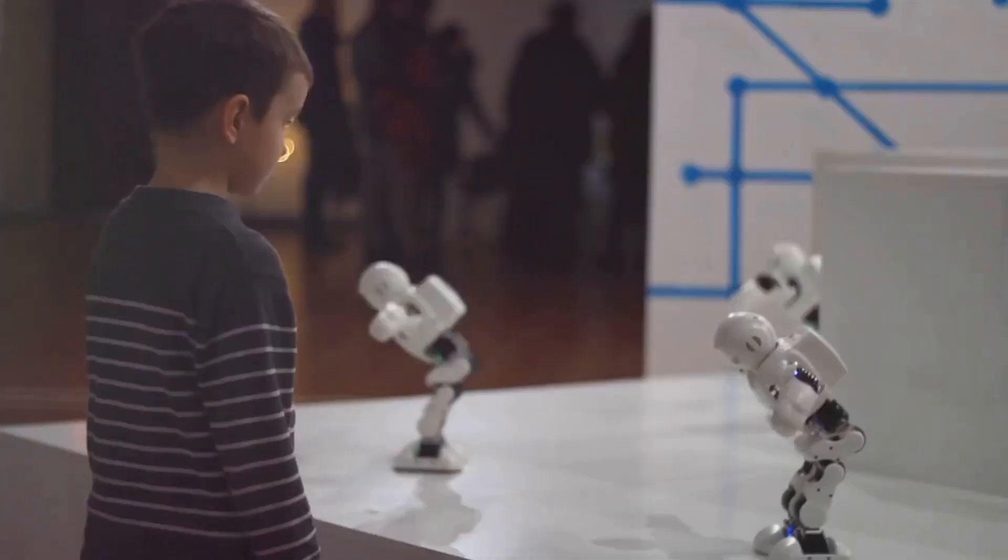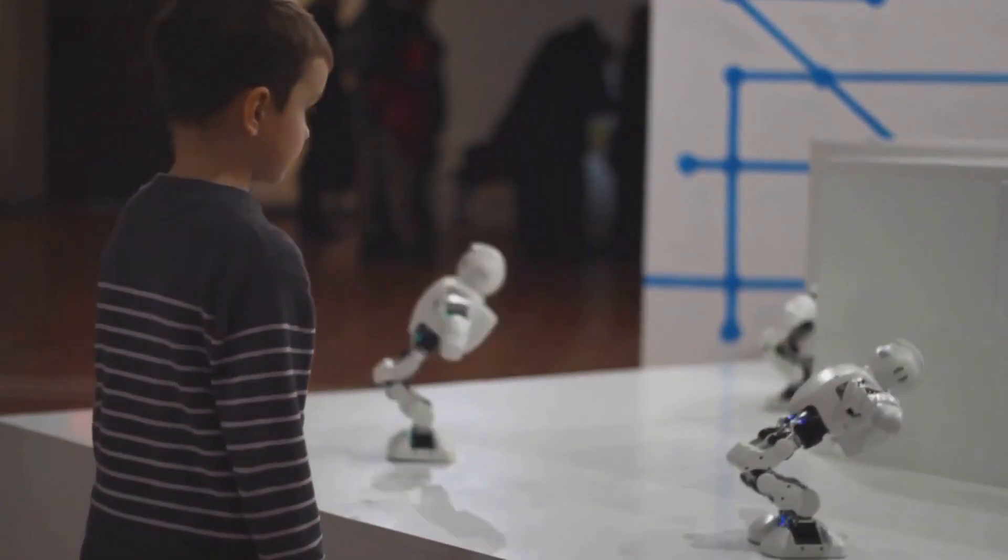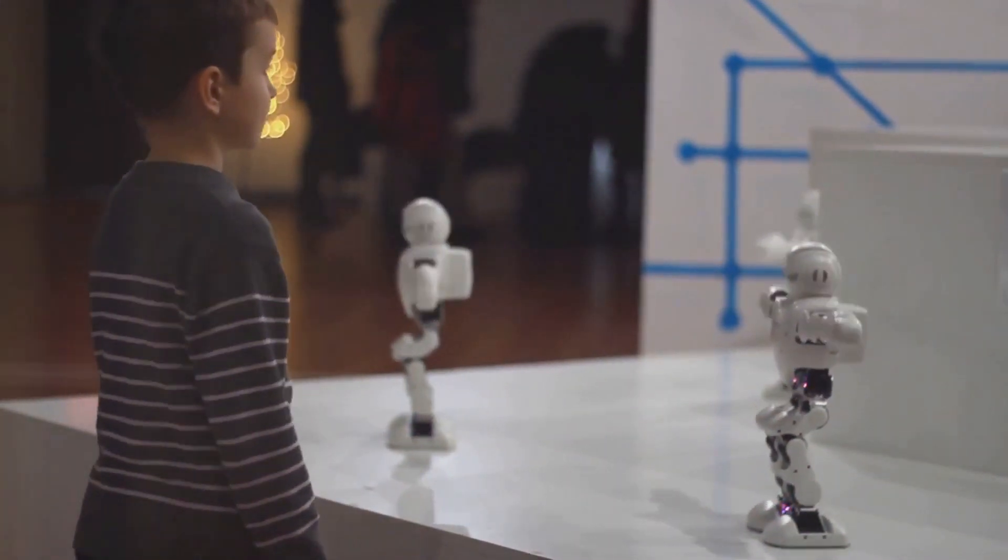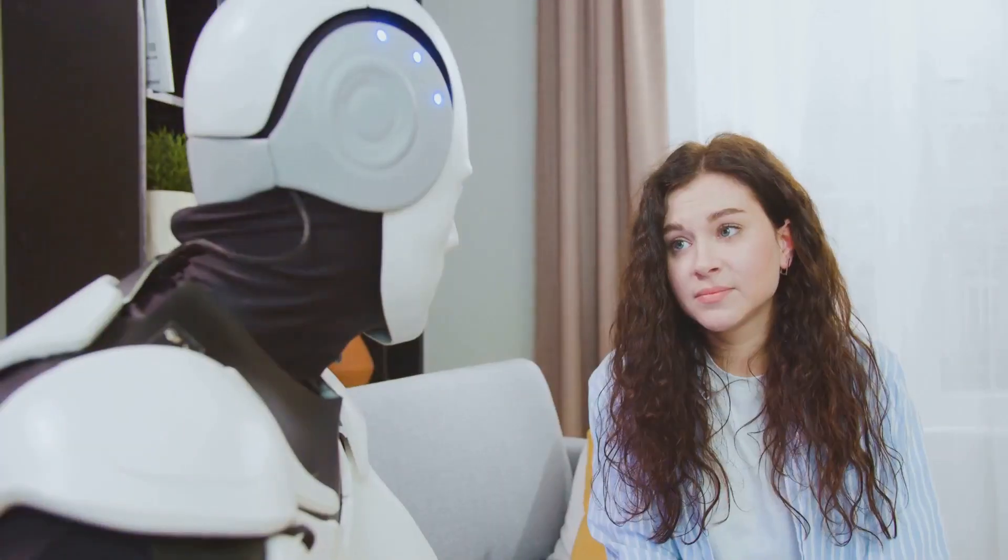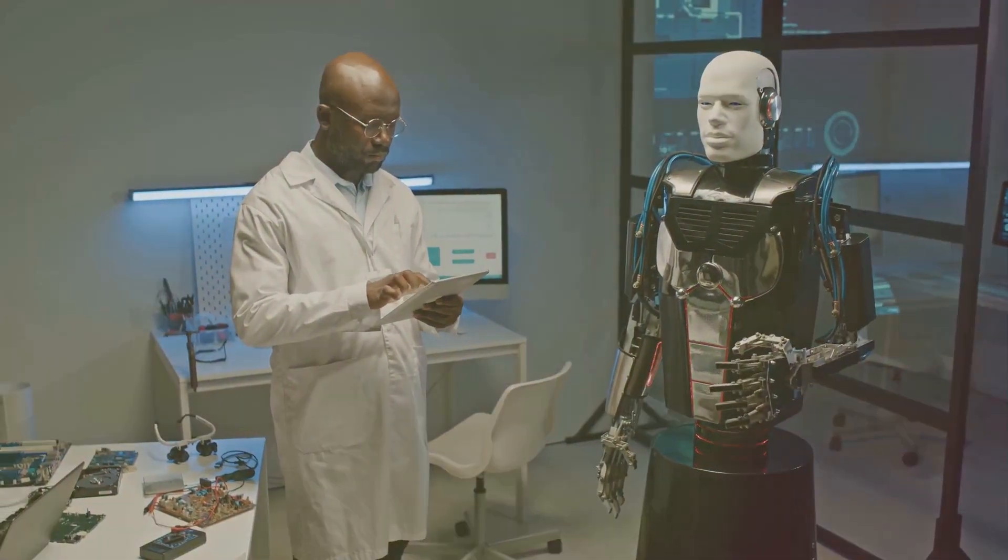And then there's companionship. Yes, you heard that right. Robotic companions, also known as social robots, are designed to interact with humans in a socially engaging manner. From providing emotional support to teaching language skills, these robots are transforming the way we interact and connect with technology. One such example is the therapeutic robot seal, Paro.